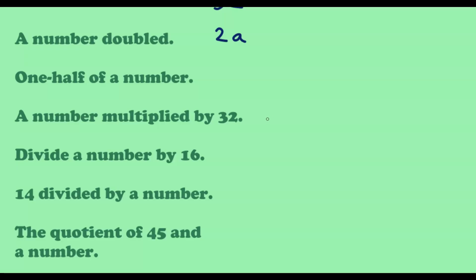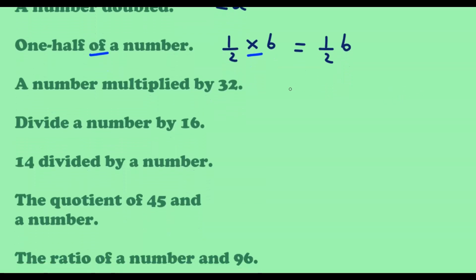Next, '1 half of a number' — whenever we use the word 'of,' we need multiplication. Using b, we get one half times b, written as half b. Next, 'a number multiplied by 32' — using c to represent the number and multiplying by 32, we write 32c.